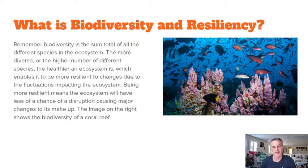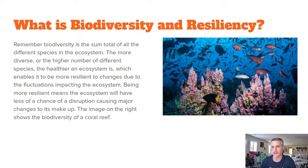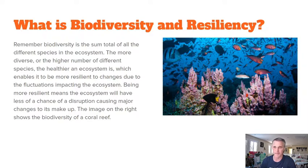Looking at the image to the right, that's showing a coral reef — lots of biodiversity, all different types of fish, the corals themselves, and other organisms living in the area, including all the abiotic factors like water and the rocks that the coral might be growing on.